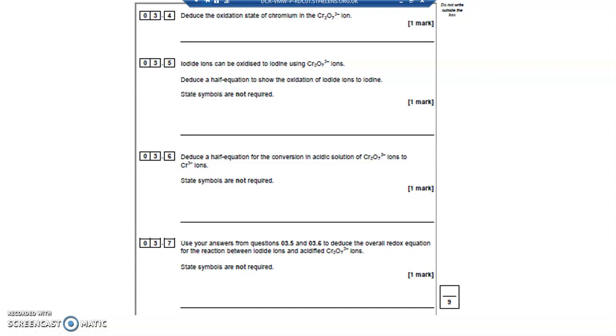Deduce the oxidation state of chromium in Cr2O7 2-. So a good reference point is oxygen. Oxygen's in group 6 in the periodic table, gains two electrons. Gaining two electrons has an oxidation state of minus 2. That's a perfect reference point.